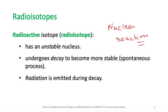So what are radioisotopes? First, recall that isotopes are atoms of the same element that have the same number of protons but different numbers of neutrons. In nature, most isotopes are stable, but a large number of isotopes of a given element are not stable.